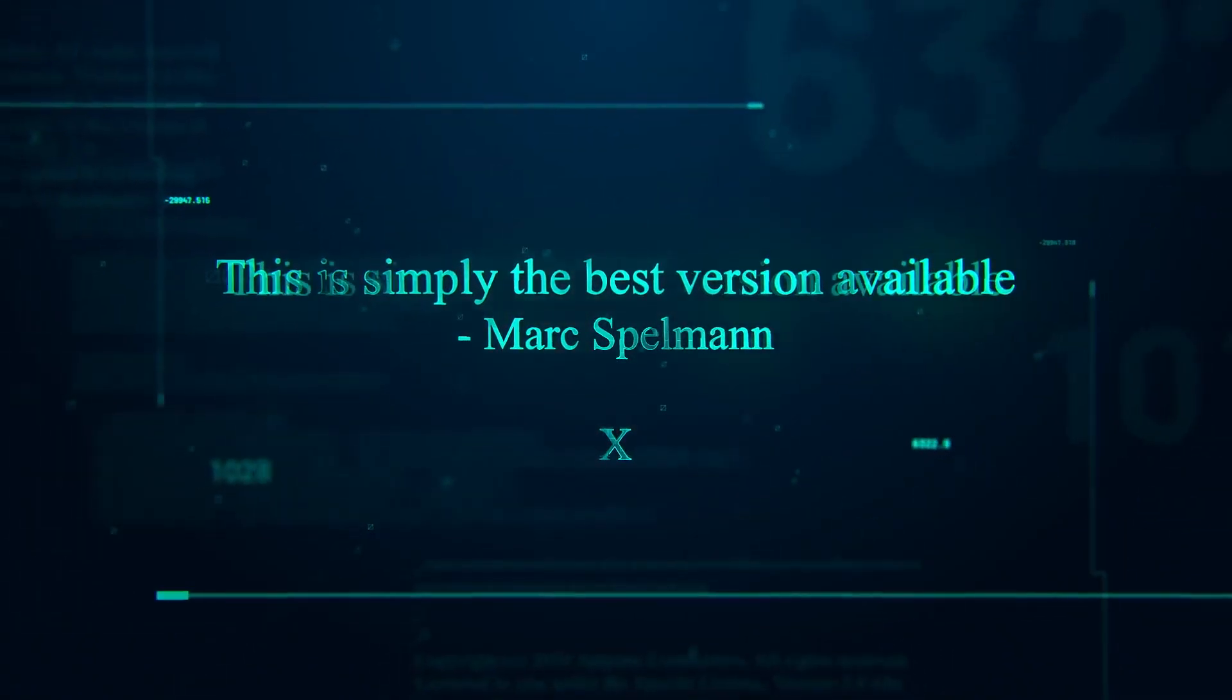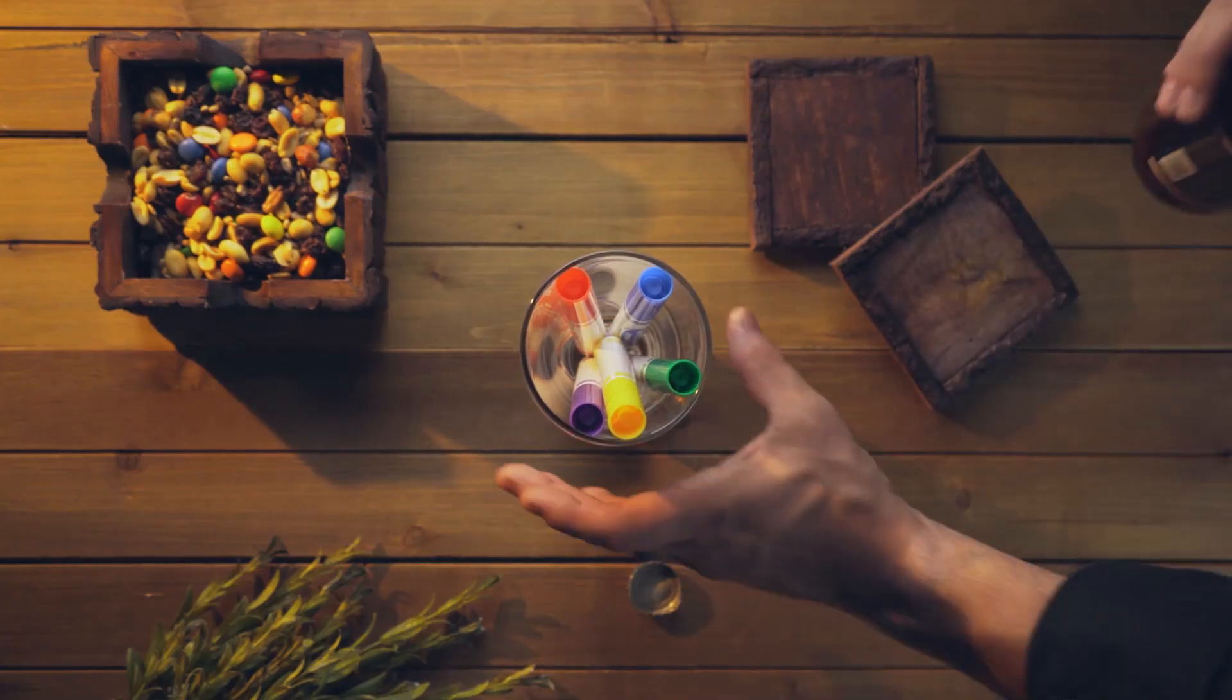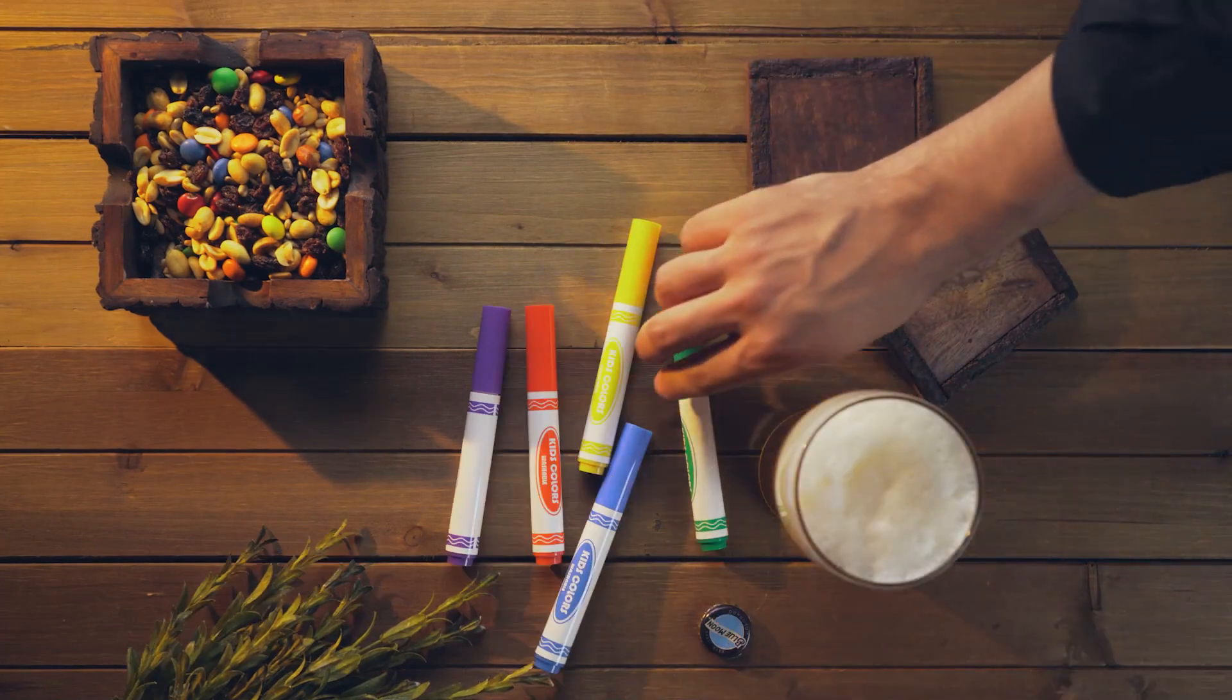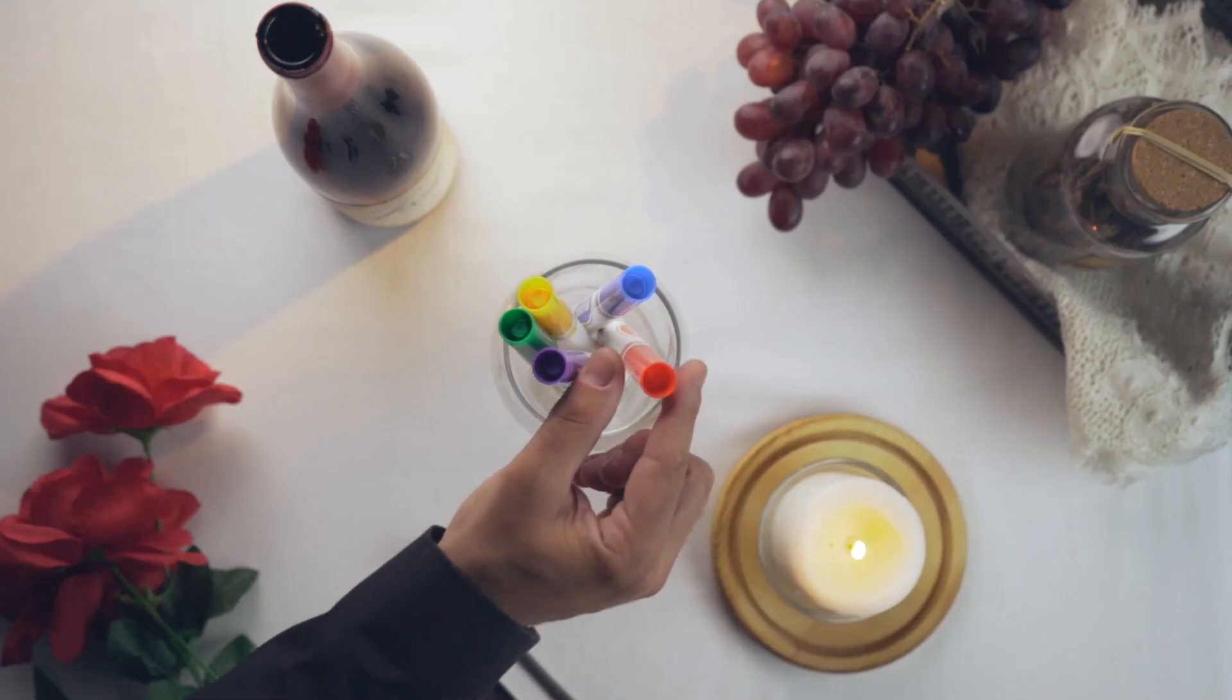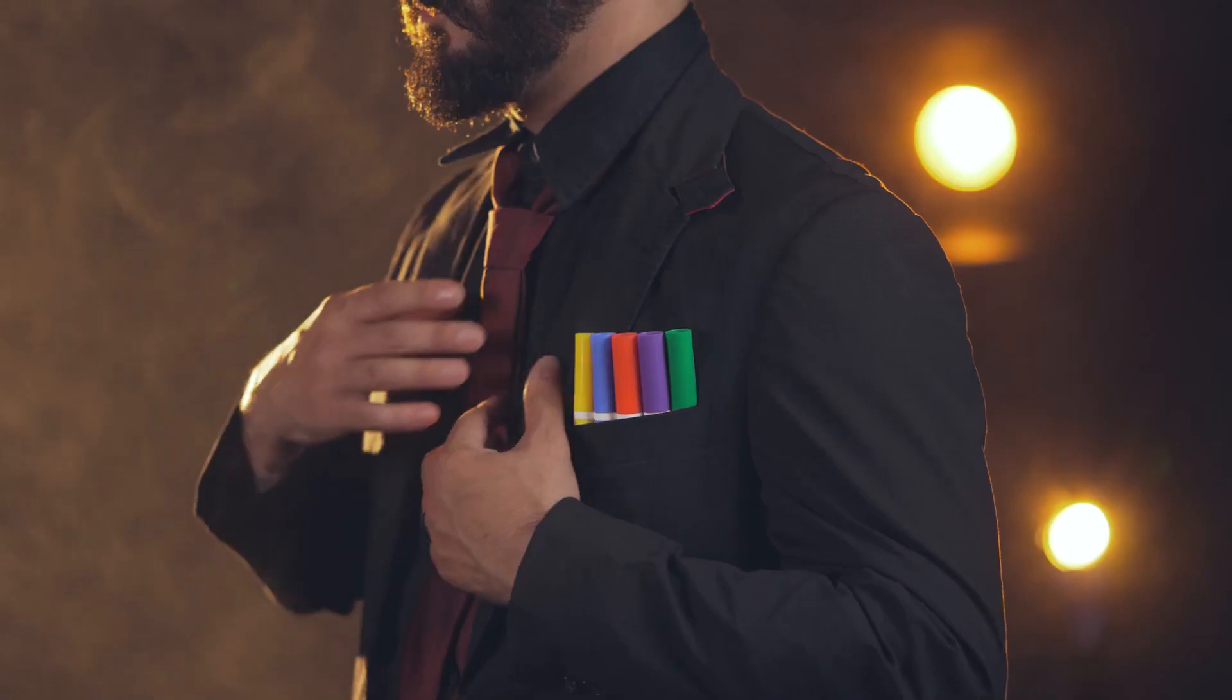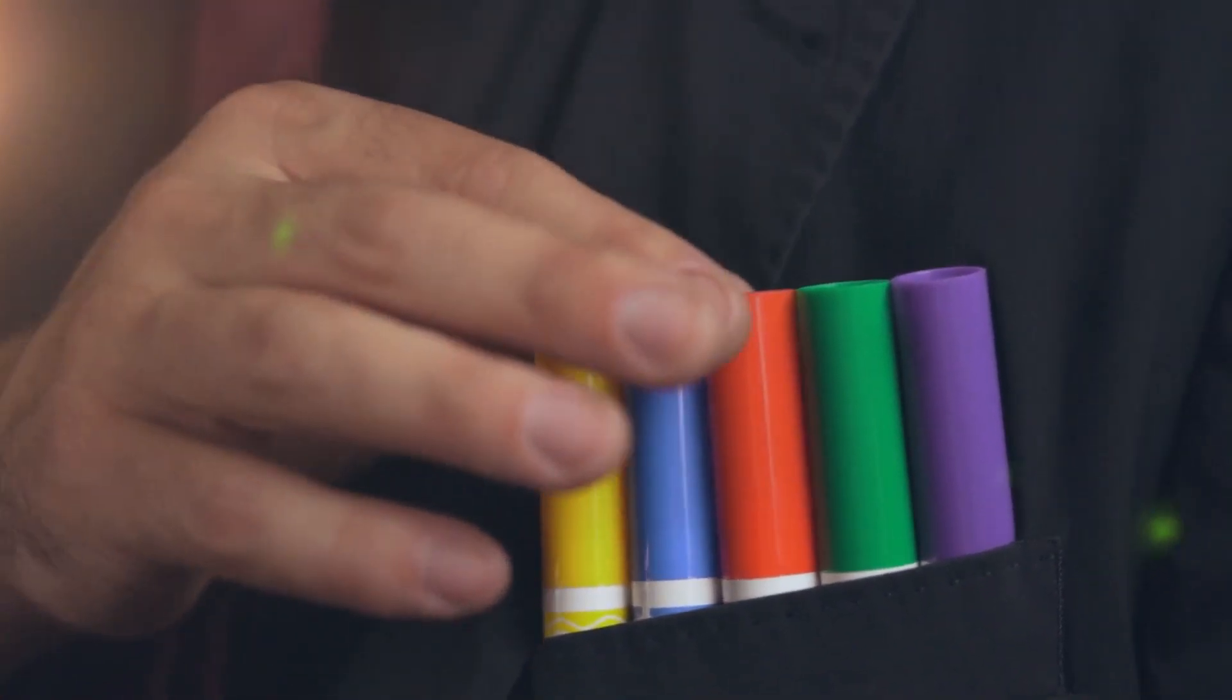In the original Enverdi set, the secret hid in the holder. Now it cleverly hides in the pen. You can use a glass or no glass on any table, any surface, even from a pocket. It molds to your environment.